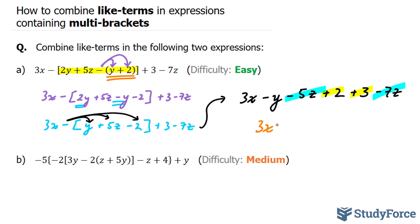Giving us 3x minus y minus 12z plus 5. This is the simplified version of A.